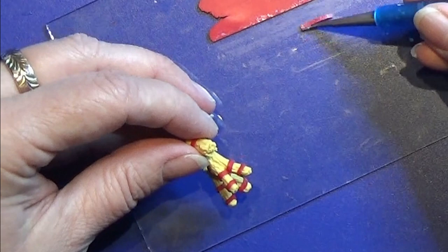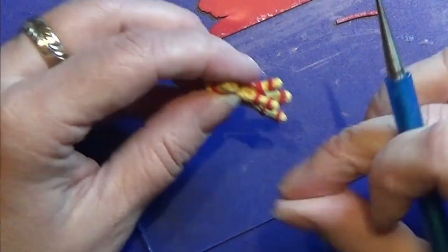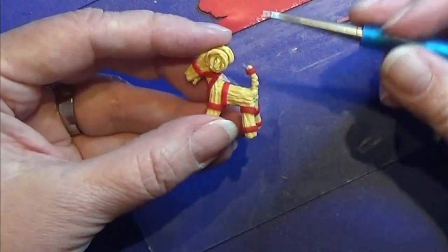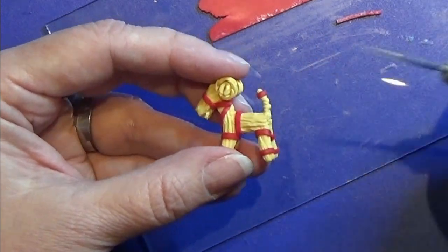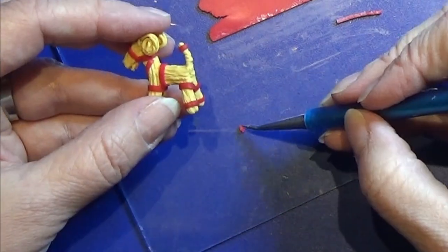Then I am making this crisscross ribbon that goes from the front, the top ribbon of the legs on the front, over the shoulder and up to the top around the neck. And I am doing this on both sides of the goat.